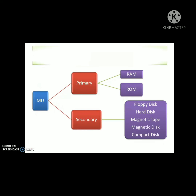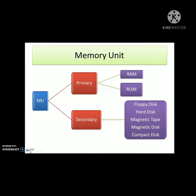And finally, we have the memory unit. Memory unit is classified into primary and secondary memory. Primary memory includes RAM and ROM — random access memory and read-only memory. In secondary memory, we use floppy disk, hard disk, magnetic tape, magnetic disk, compact disk or CD, etc.